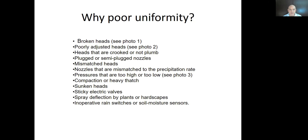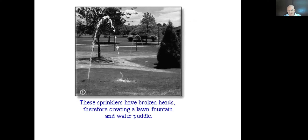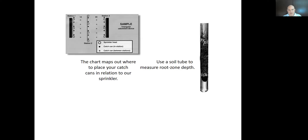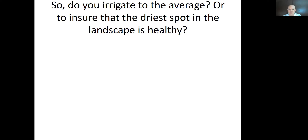Poor uniformity has many causes. The key is to make sure you have a good system and fix leaks, broken heads, and tipped-over heads consistently. On a large property, it pays to have someone actively maintaining the irrigation system. Use catch cans to measure distribution uniformity, and use a soil probe or shovel to measure rooting depth. Trees with larger root systems are less sensitive to uniformity problems than turf grass with its tiny root systems.